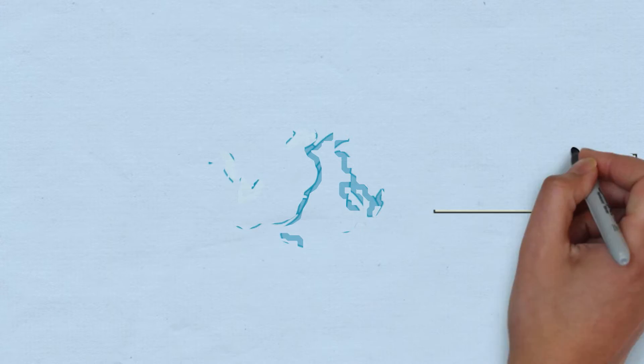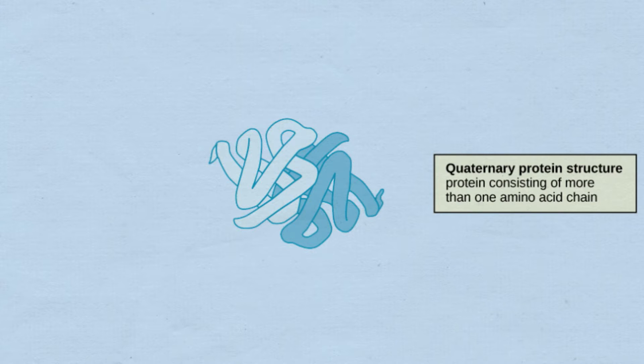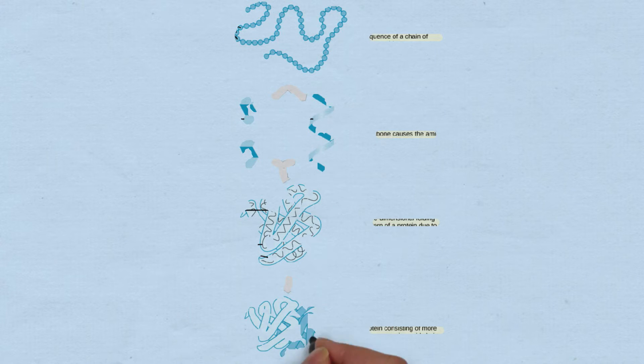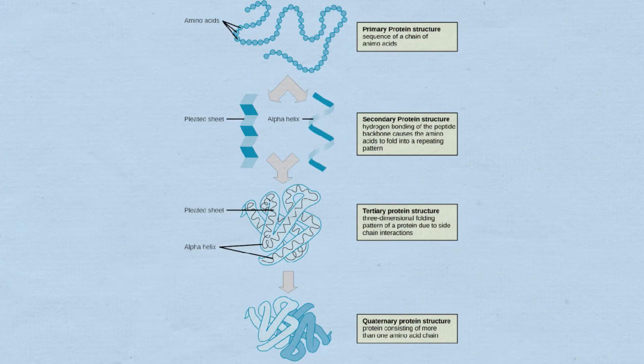The final level of protein structure is the quaternary protein structure. This is when two or more protein chains that are in the tertiary structure are joined together by disulfide bonds. There can also be non-protein groups attached to the protein. For example, iron is important to the function of haemoglobin and they are both bonded together.